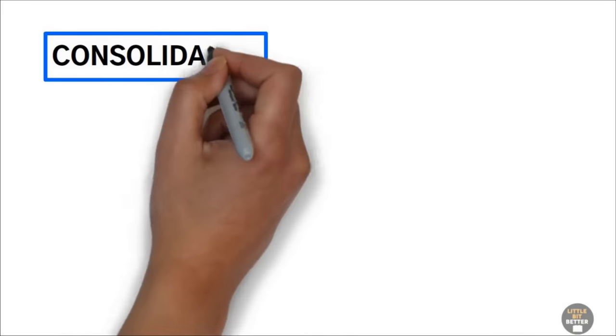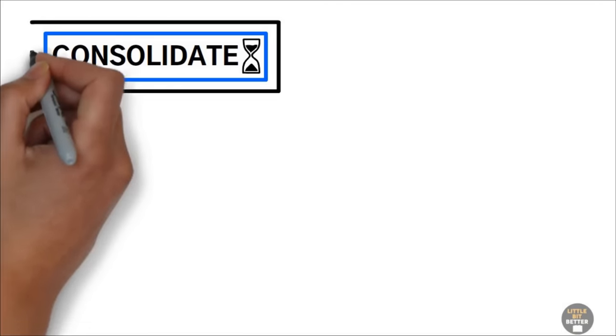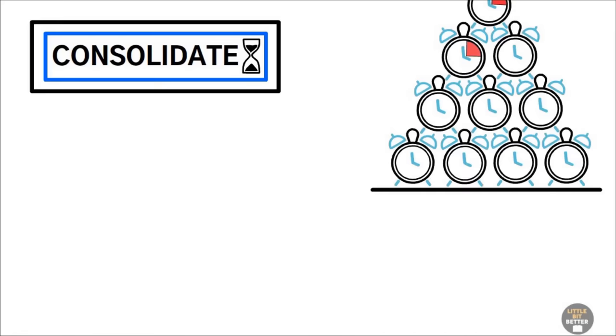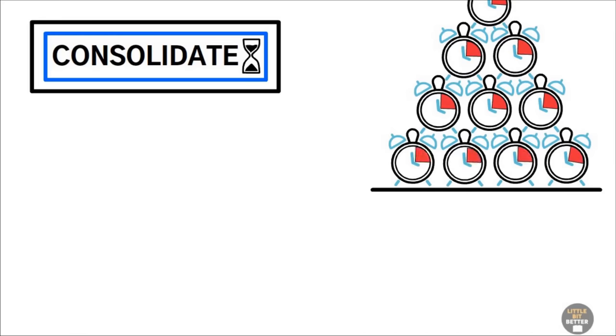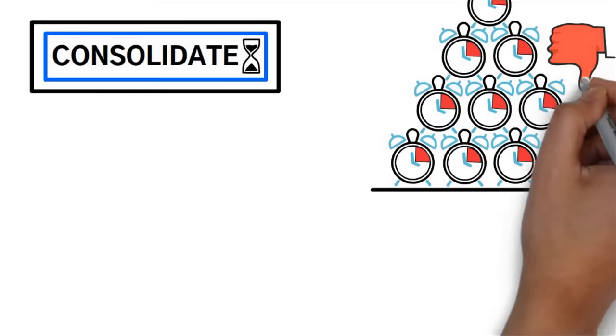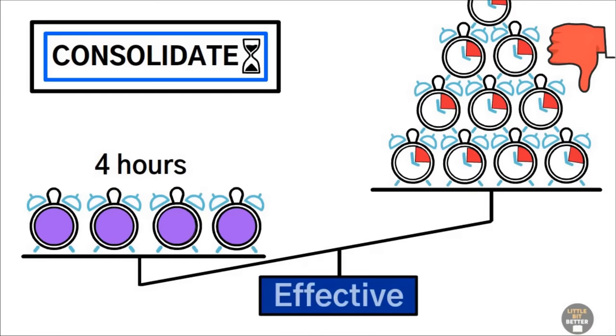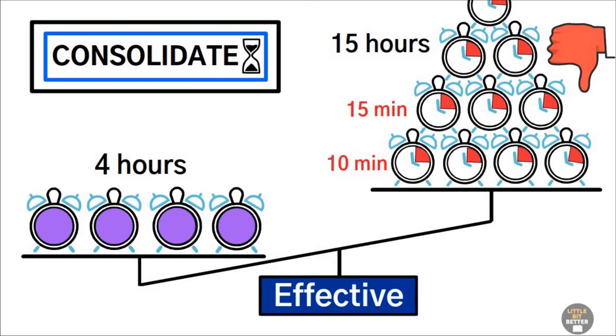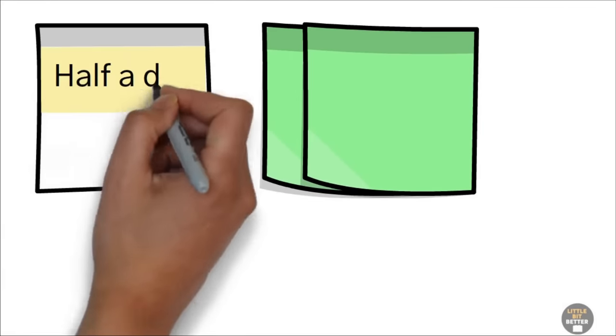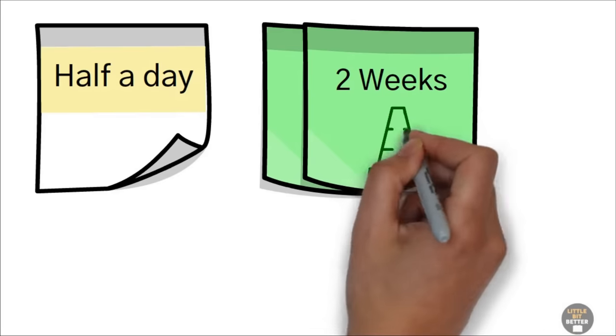After tracking your time and eliminating time wasters, the final step is to consolidate your time into large blocks. Drucker says that having small bits of time here and there, even if they add up to a significant number of hours, isn't effective. Working for four hours straight is more effective than working for 15 hours if those 15 hours are only available as 15 minutes here and 10 minutes there. According to Drucker, an optimal time block ranges from half a day to two weeks. Yes, you heard it right. Up to two weeks.